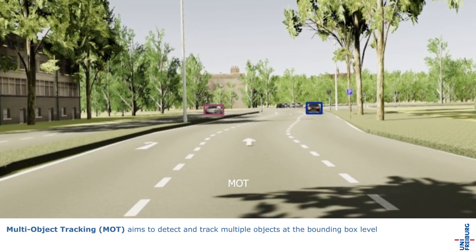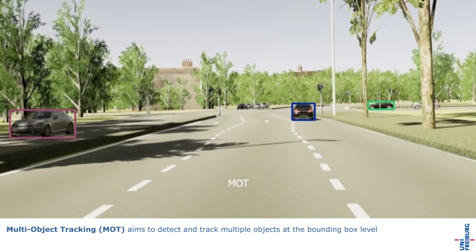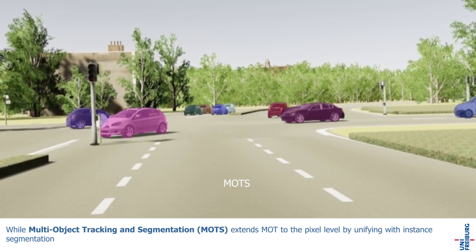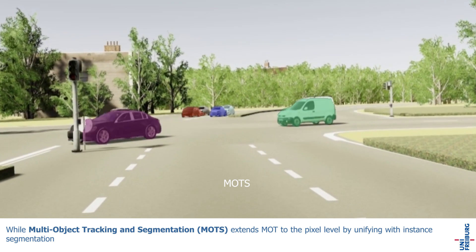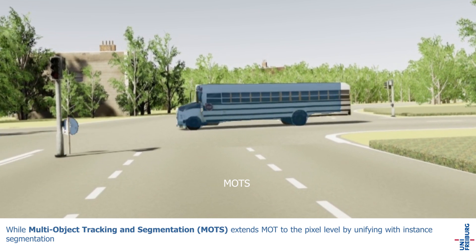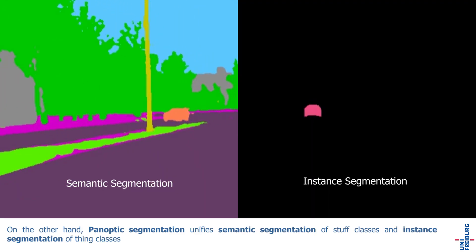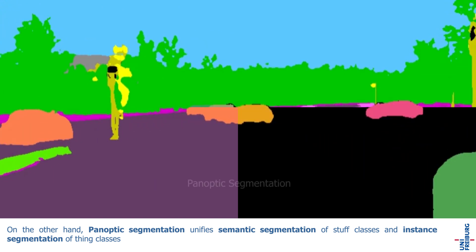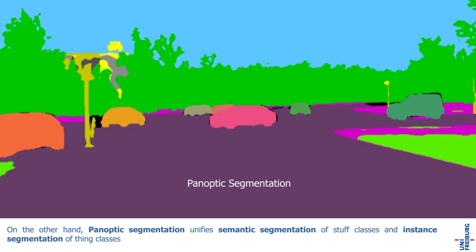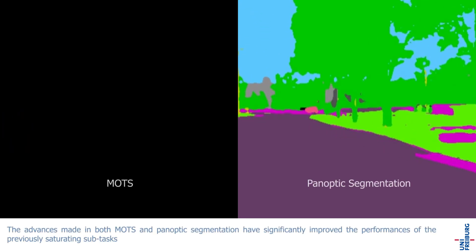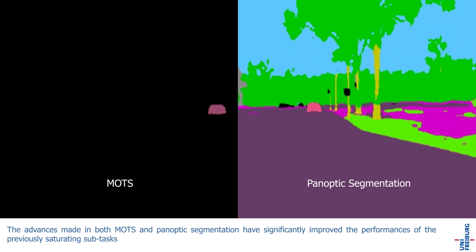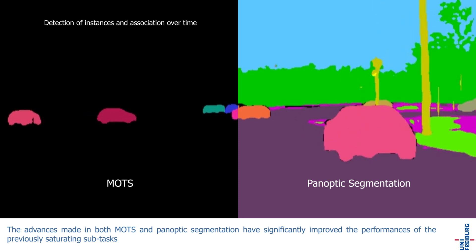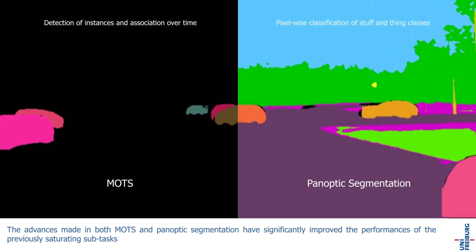Multi-Object Tracking aims to detect and track multiple objects at the bounding box level, while Multi-Object Tracking and Segmentation extends this to the pixel level by unifying with instance segmentation. On the other hand, Panoptic Segmentation unifies semantic segmentation of stuff classes and instance segmentation of thing classes. The advances made in both areas have significantly improved the performances of previously saturating sub-tasks.